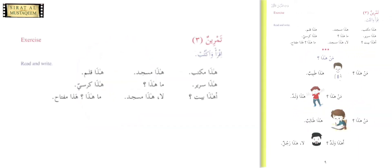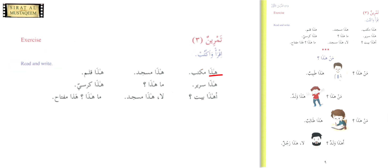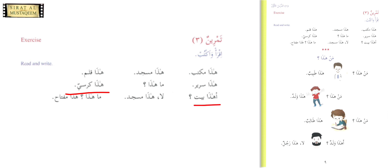Tamreen three — 'iqra wa uktub' means 'read and write.' So whatever is written, we read and write it. 'Haza maktabun' — this is a desk; 'haza masjidun' — this is a masjid; 'haza qalamun' — this is a pen; 'haza sarirun' — this is a bed. 'Ma haza? haza kursiyyun' — what is this? This is a chair. 'Ahaza baytun? la, haza masjidun' — is this a house? No, this is a masjid. 'Ma haza? haza miftahun' — this is a key.